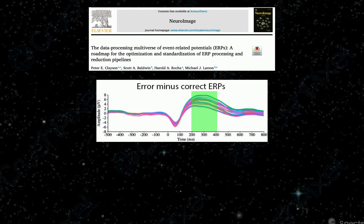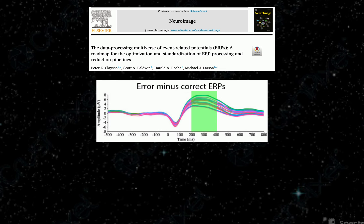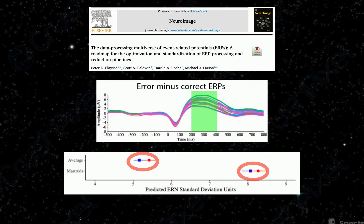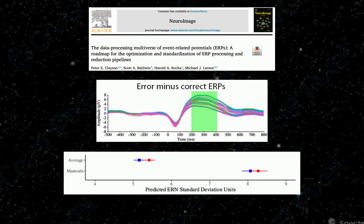Finally, here we have another typical ERP called the Event-Related Negativity or ERN, comparing the ERP of correct responses versus errors in a discrimination task. The ERN is measured between 200 and 400 ms post-response. Here we see the mean and standard deviation for correct responses in red and errors in blue. Note that this is part of a larger linear model with many variables. It shows that the choice of reference can influence ERP amplitude and statistics. It makes sense that changing the reference would influence the statistic at one channel, because the difference between conditions might be more prominent on some channels than on others.